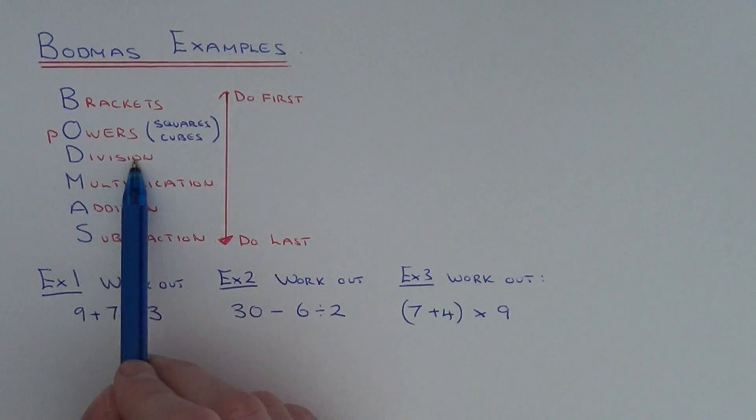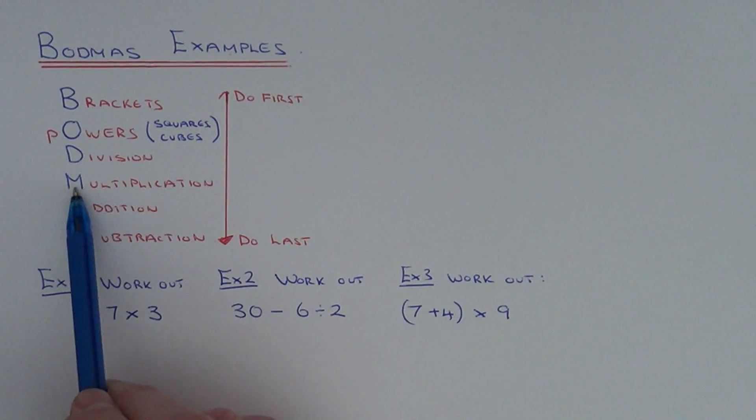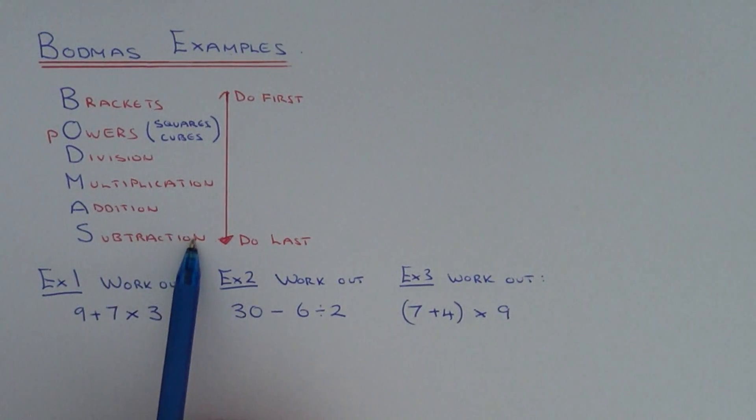The D stands for Division, the M stands for Multiplication, A stands for Addition and finally you've got S which is Subtraction, so you do the subtraction bits last.